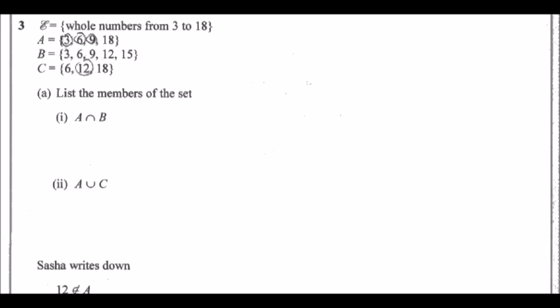Number three: We've got a universal set of all whole numbers from 3 to 18. If you had to copy this out properly, you can write all whole numbers from 3, 4, 5 all the way to 18. Now it tells us that A, B, C are given by the following elements. List the members of the set A intersect B. This means what A and B have in common. We can see that they both have a 3, a 6, and a 9.